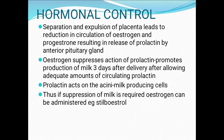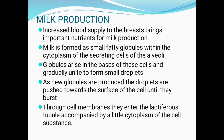Thus if suppression of milk is required, estrogen can be administered. Milk production: increased blood supply to the breast brings important nutrients for milk production. Milk is formed as small fatty globules within the cytoplasm of the secreting cells of the alveoli. Globules arise in the base of the cell and gradually unite to form small droplets. As new globules are produced, the droplets are pushed towards the surface of the cell.